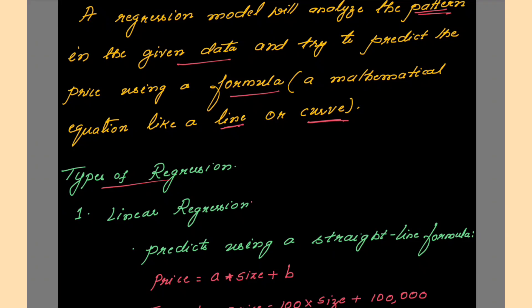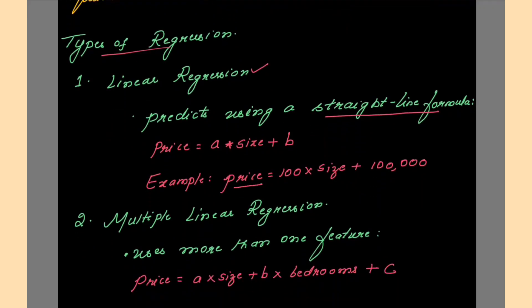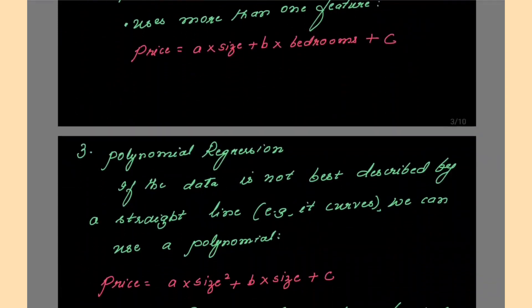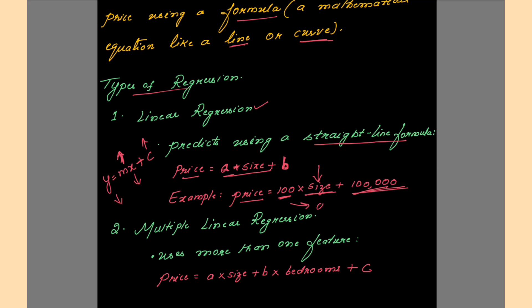Types of regression: linear regression uses a straight-line formula. The formula is price = a × size + b, which is simply y = mx + c, where x is your independent variable, y is your dependent variable, m is the slope and c is the intercept on the y-axis. Here b is the intercept on the y-axis and a is the slope. When you substitute the value of the size you will get the price.